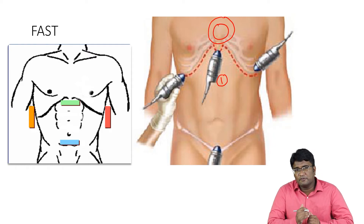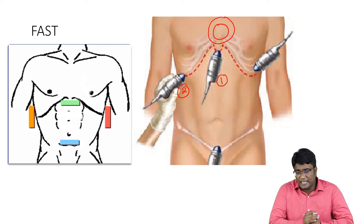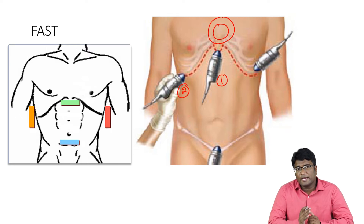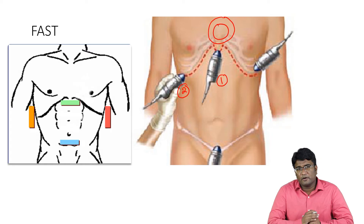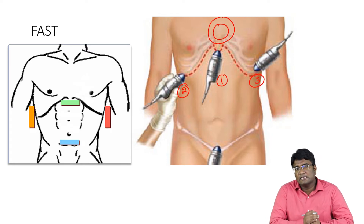The sub-xiphoid view looks at the pericardium and is the first area assessed in FAST. The second place we put our probe is in the right lumbar region or right flank region, where we are trying to look at any collections in the perihepatic region and the right paracolic gutter.